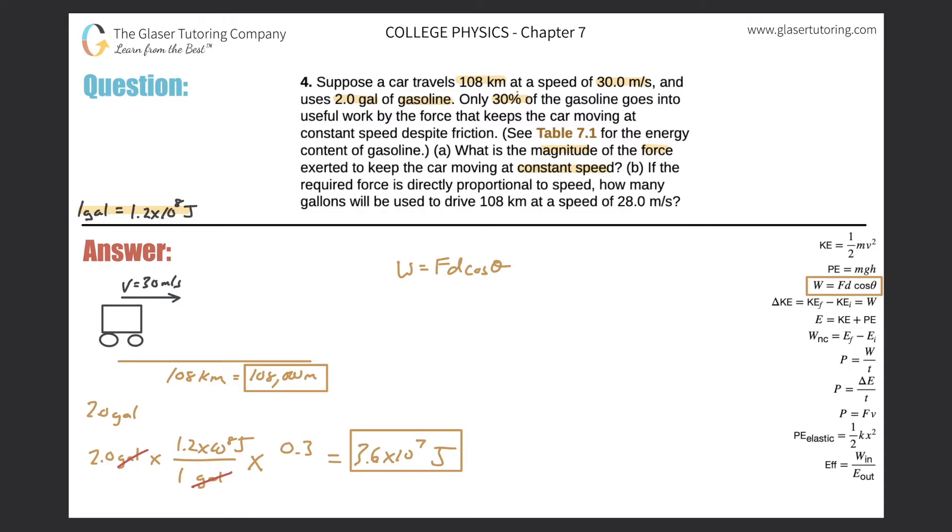So now I just solved for this variable. And guess what? All we got to do is plug it all in to find my force now. So the work that's done by the gas, essentially is 3.6 times 10 to the seventh. The force, I don't know. That's what I'm looking for. The distance the car traveled was 108,000 meters. And the angle between them, let me just plug in a zero there. So this just goes to one. And then I just have to divide out the 108,000 from both sides.